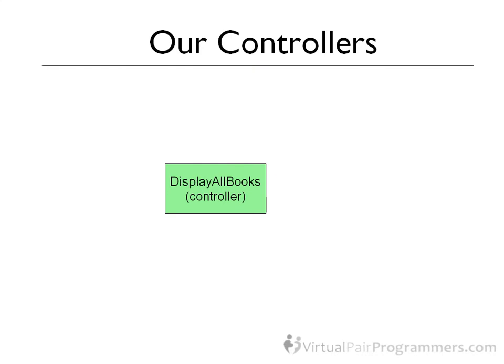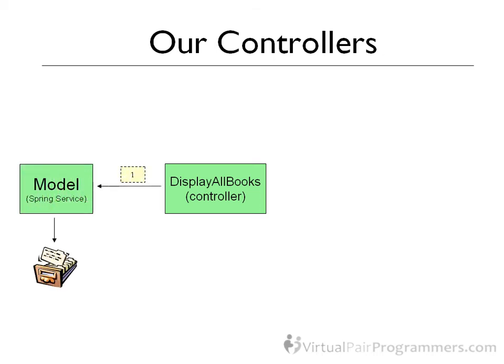Now what does a controller do? Imagine we've written our displayAllBooks controller. The process is usually quite simple. The displayAllBooks controller, which will be our Java code, is going to call the model. On a Spring course we can be specific and say that the model is usually a Spring service. One of the reasons we're using Spring MVC is you're going to see that process is really simple — we don't even have to open an application context. It's all done automatically for us.